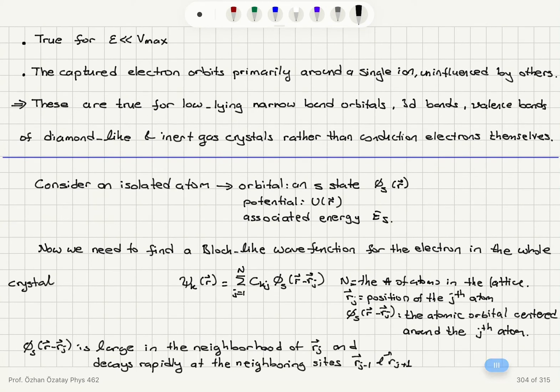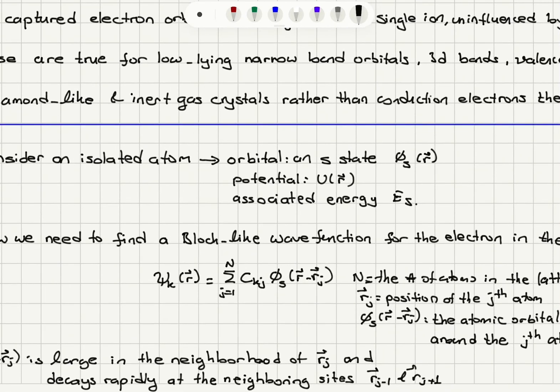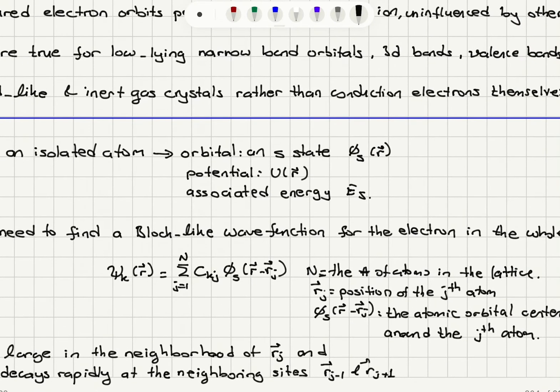Now what we need to do is to find a Bloch-like wave function for the electron in the whole crystal. So it has to have the form sum over j equals 1 to capital N where N is the number of atoms in the lattice.